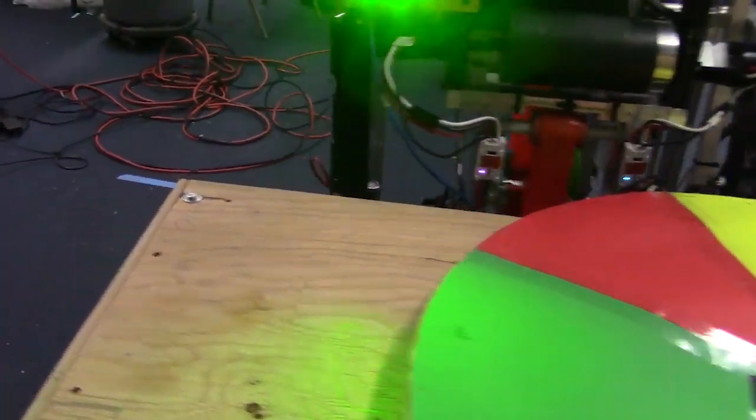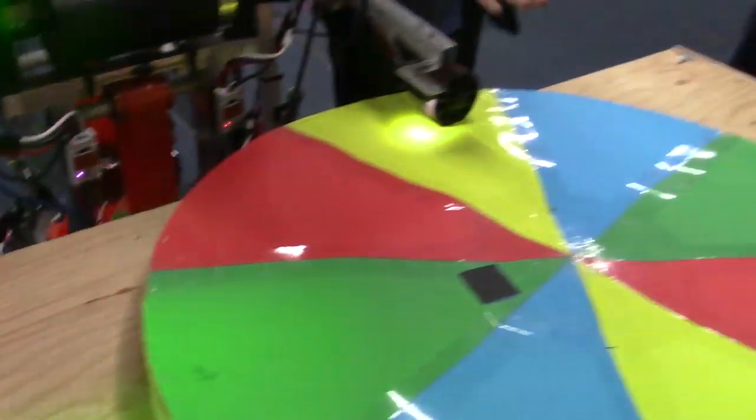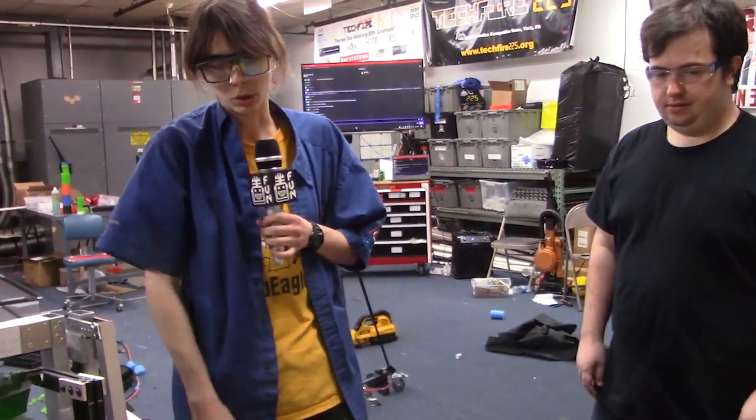That way we get our arm in a known position every time, because if the arm is slightly over, the color we're sensing to have it lined up would be different.